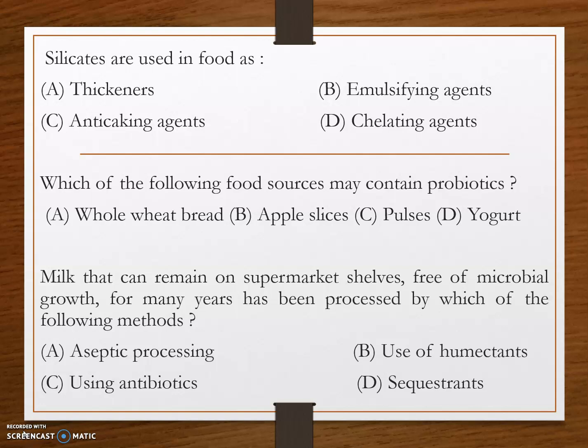Potassium and sodium silicate are used in industry as industrial cleaners and detergents. The form of silicate used in food is sodium metasilicate, which has GRAS (Generally Recognized As Safe) status.